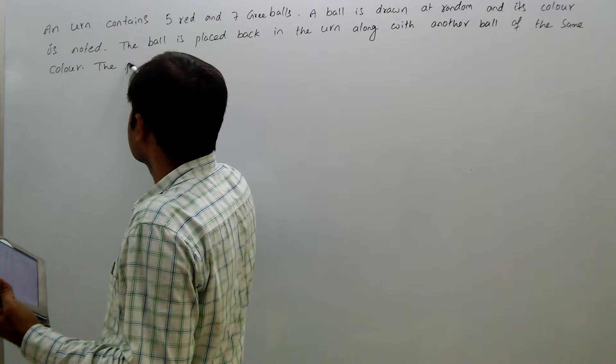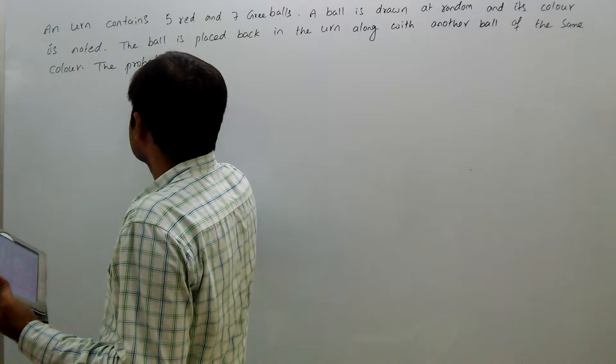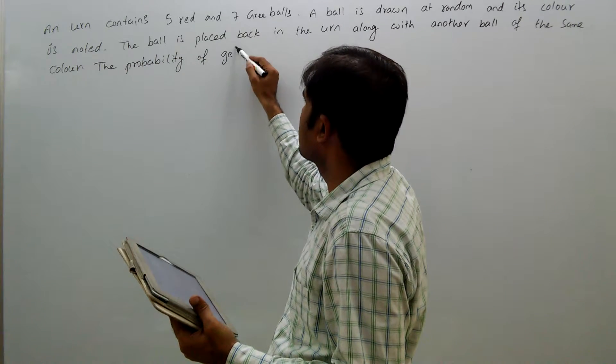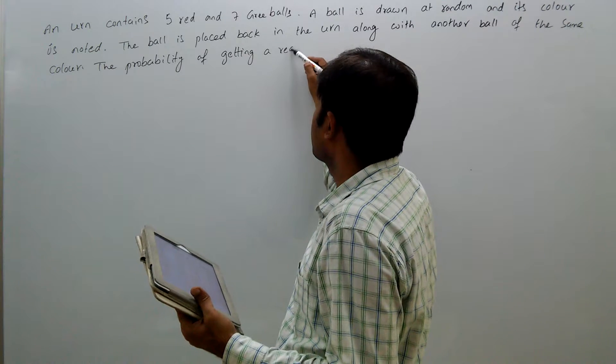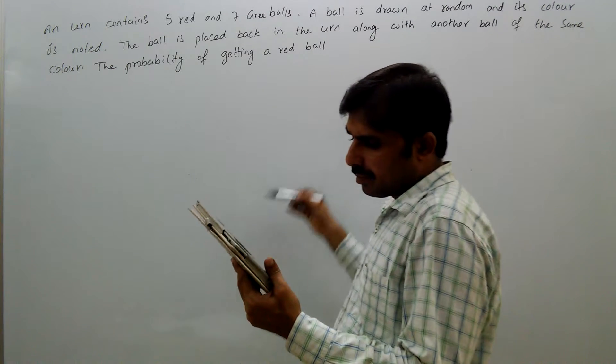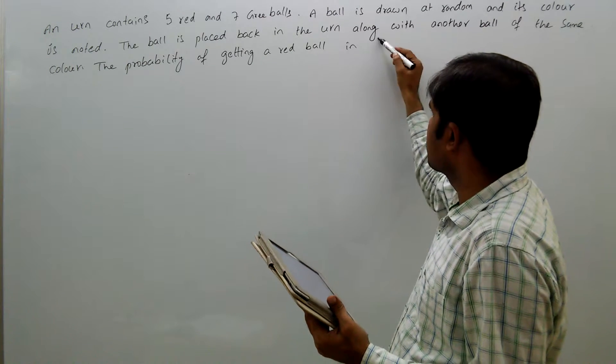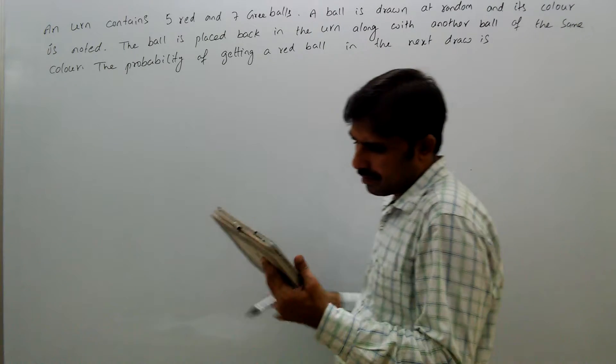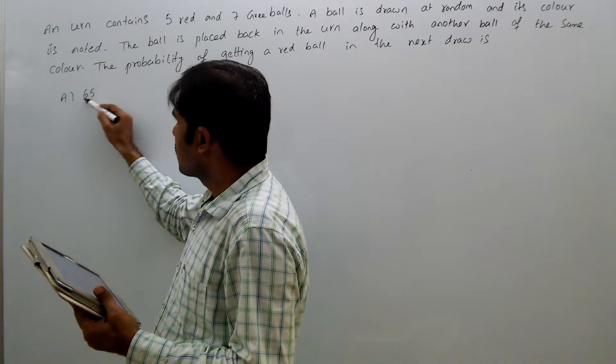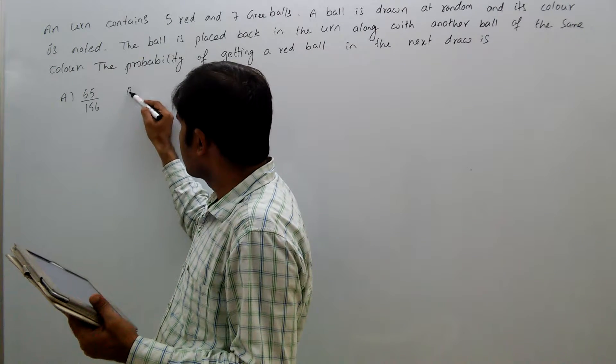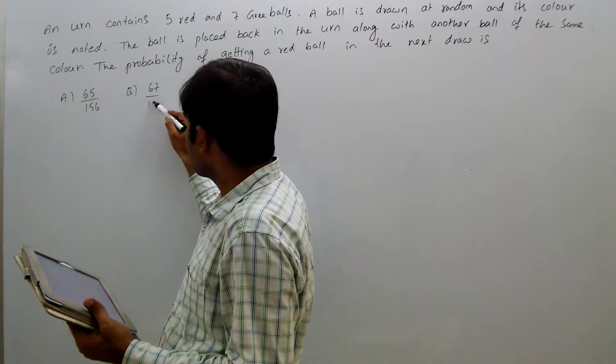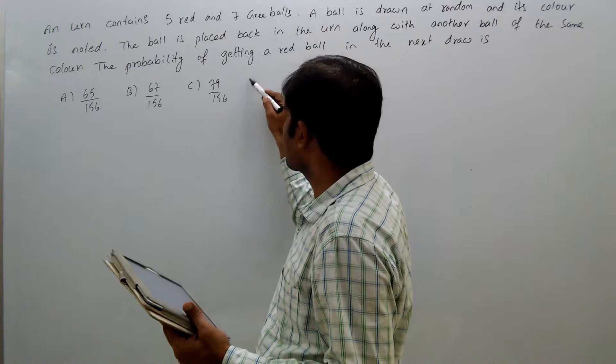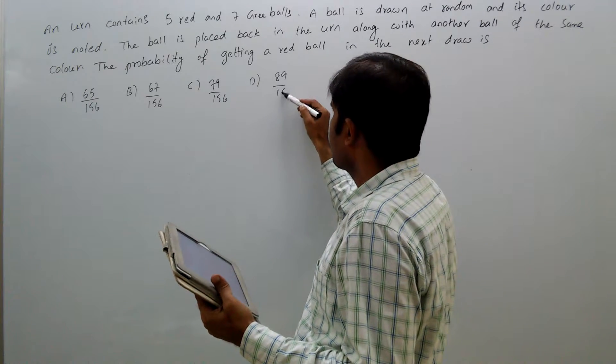The probability of getting a red ball in the next draw is: Option A: 65 by 156, Option B: 67 by 156, Option C: 79 by 156, Option D: 89 by 156.